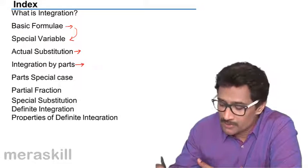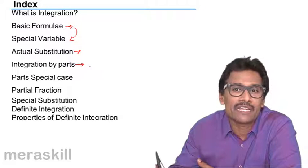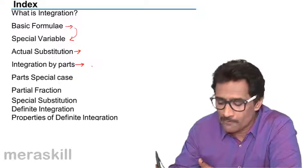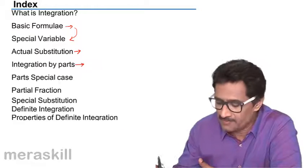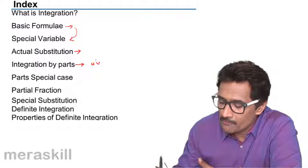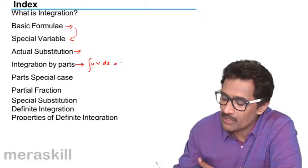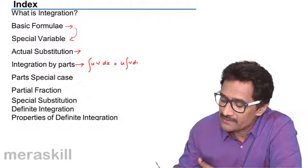Then we have integration by parts. There is a specific formula for integration by parts. Suppose you have to find the integral of uv dx, then accordingly we have a formula which is going to be u into integral of v dx